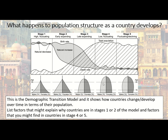As populations move into stage four — very much where the UK is — you see an even more straight-sided pyramid. Stage five is where a population can actually start to decline. It won't decline very much but it will decline, and we'll explain the reasons for that.